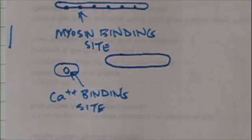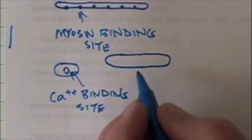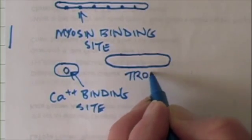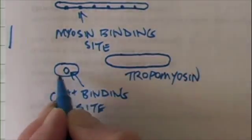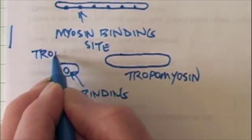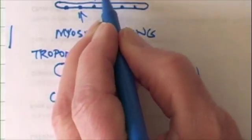The tropomyosin and the troponin are regulatory proteins. So this is tropomyosin. This is troponin. And this is the actin.